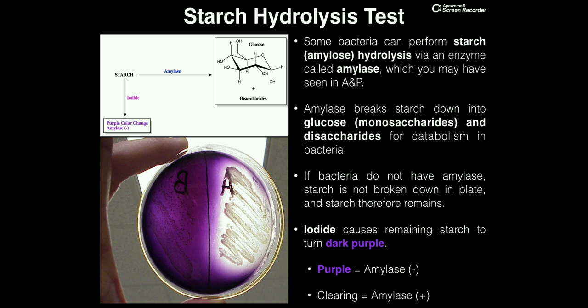What we do is plate two species of bacteria — one on each side of the plate. Typically, you take a marker on the back side of the plate and draw a line so you know where you're plating. On either side of that line, you have a different species of bacteria.